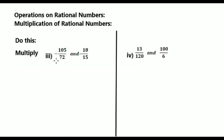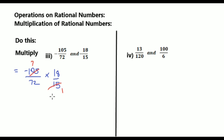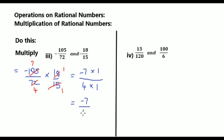See now third sum: multiply -105/72 and 18/15. That equals to -105/72 into 18/15. Now we shall do cancellation: 15 ones are 15, 15 sevens are 105; 18 ones are 18, 18 fours are 72. That equals to multiply numerators -7 into 1 by multiply denominators 4 into 1. That equals to -7 into 1 = -7 by 4 into 1 = 4. So the answer is -7/4.